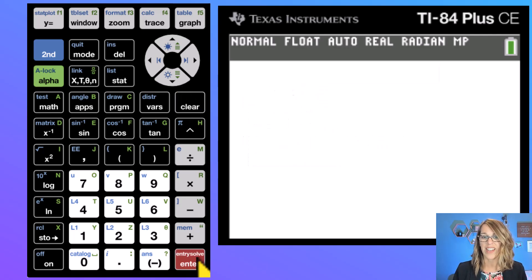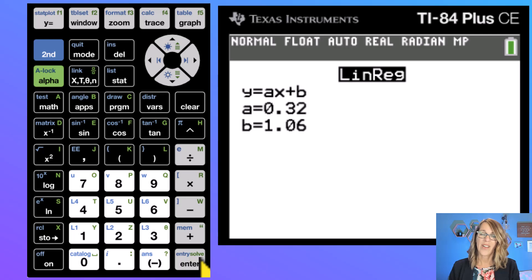Let's arrow down and hit calculate. Now you'll notice, and yours may have done this too, I get a value for a and I get a value for b which is great. This is my regression equation now, y equals 0.32x plus b, so 0.32x plus 1.06, but it didn't give me r or r squared.